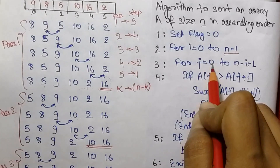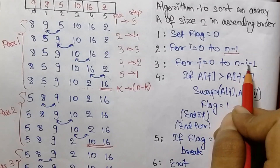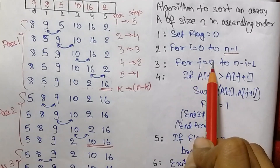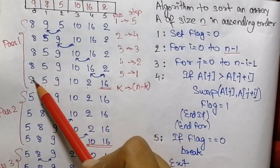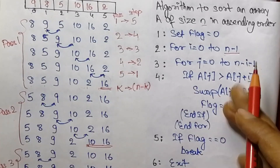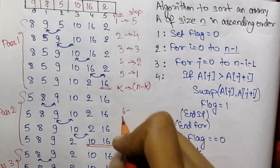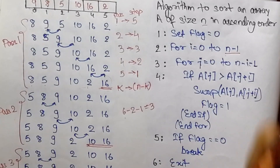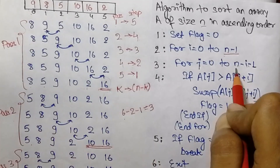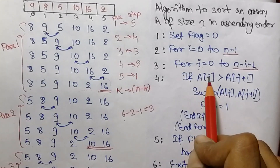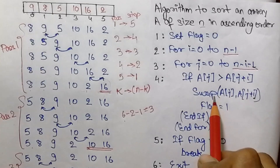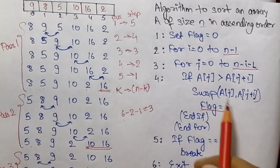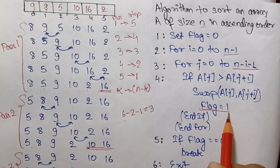You can check it: for pass 1, j equals 0, it will run up to n-i-1 where i is 1. So for this example, 6 minus 1 minus 1 equals 4, meaning j runs from 0 to 4 — that is 5 times. Similarly for pass 2, n is 6, i is 2, so n-i-1 equals 3, meaning j runs from 0 to 3, which is 4 times. So for this reason we are using n-i-1. Then, if the element at the jth position is greater than the element at j+1th position, we will swap both elements and set the flag variable to 1, which was declared as 0 initially.